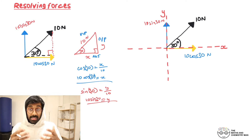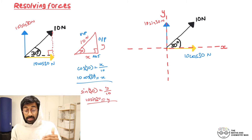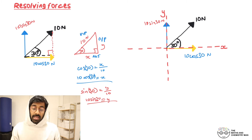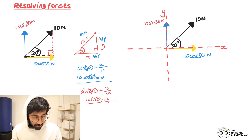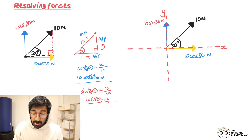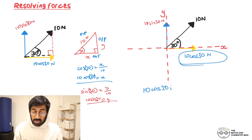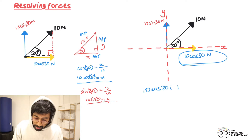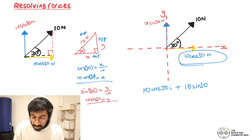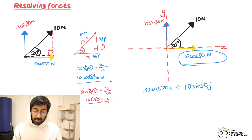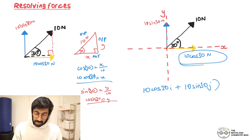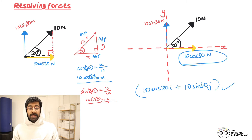To turn this into i and j form — where i is the unit vector in the x direction and j in the y direction — we write: 10 cos 30 i + 10 sin 30 j. You can punch that into the calculator and turn those into decimals if you want.